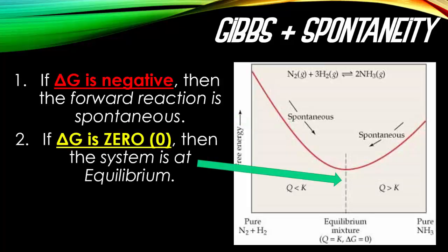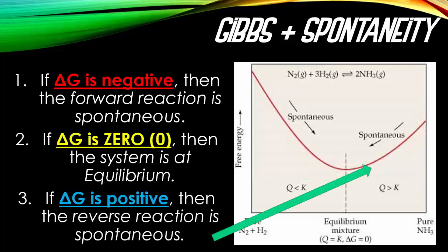If delta G is zero, your Gibbs free energy is zero, meaning you are at equilibrium — a constantly equal ratio of reactants to products. If you have a positive delta G, meaning a gaining of free energy, you're going up the red curve line. This means the reverse reaction is going to be spontaneous — your products will be breaking down and reforming the original reactants.